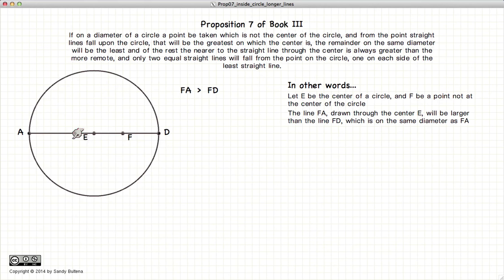Now the first part of this proposition states that the side, the part of the line that goes through the center of the circle, in other words FA, will be larger than FD.